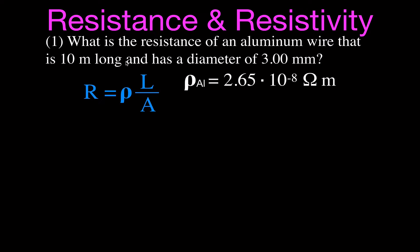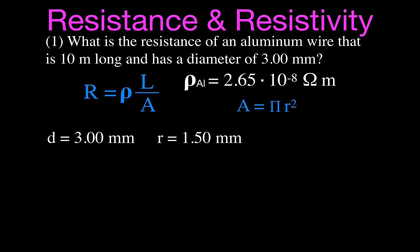We're given the length, but we need the area. Most wire has a circular cross-section, so the area is pi r squared. The diameter is 3 millimeters, so the radius is half of that: 1.5 millimeters, which in meters is 1.5 times 10 to the minus 3 meters. Now we have everything we need to plug the values in.